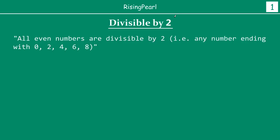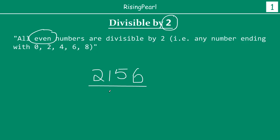Divisible by 2. So when do we know that any given number — let's write a sample number: 2156 — is divisible by 2? The rule states all even numbers are divisible by 2. That is, any number that ends with the digit 0, 2, 4, 6, or 8 — those are all even numbers. So any number that ends with these digits will be even, and all even numbers are divisible by 2. So yes, 2156 can be divided by 2 with a remainder of 0.